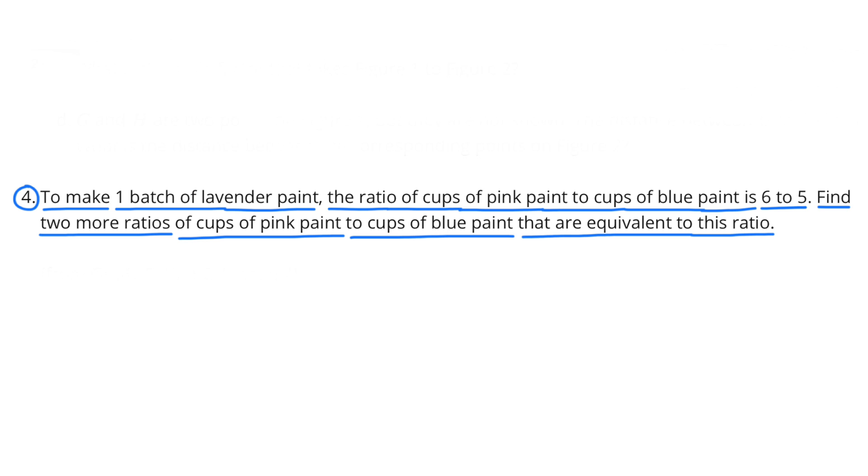Number 4. To make one batch of lavender paint, the ratio of cups of pink paint to cups of blue paint is 6 to 5. Find two more ratios of cups of pink paint to cups of blue paint that are equivalent to this ratio.